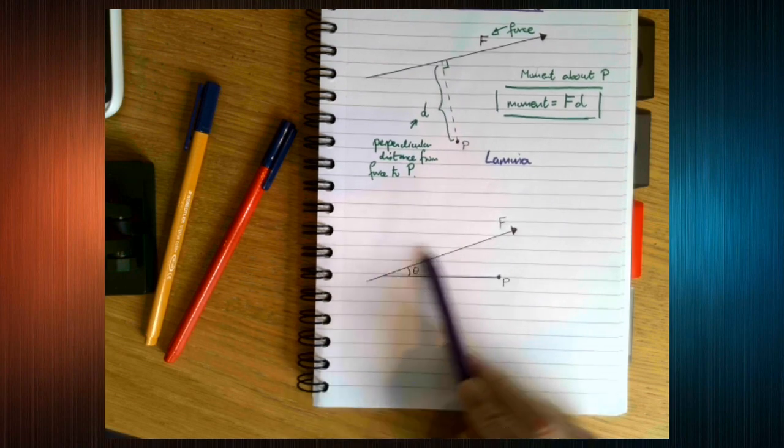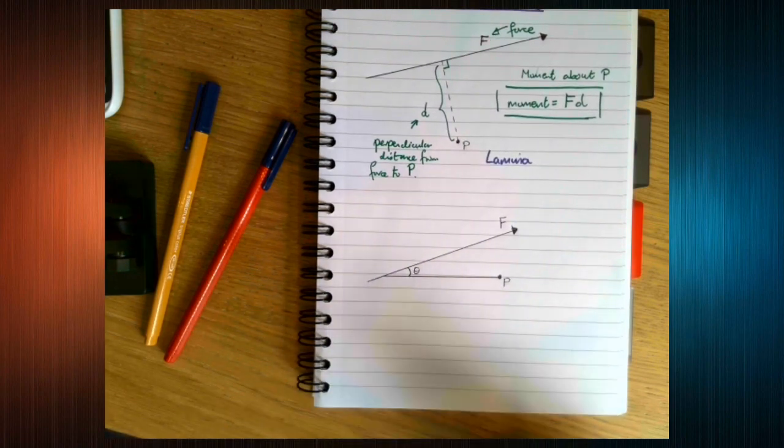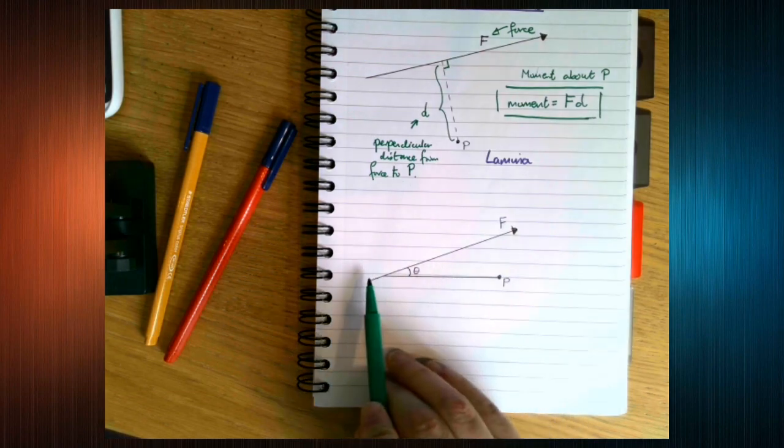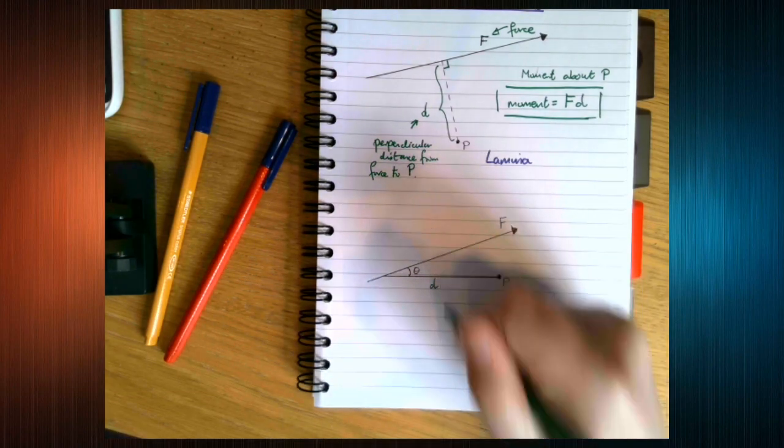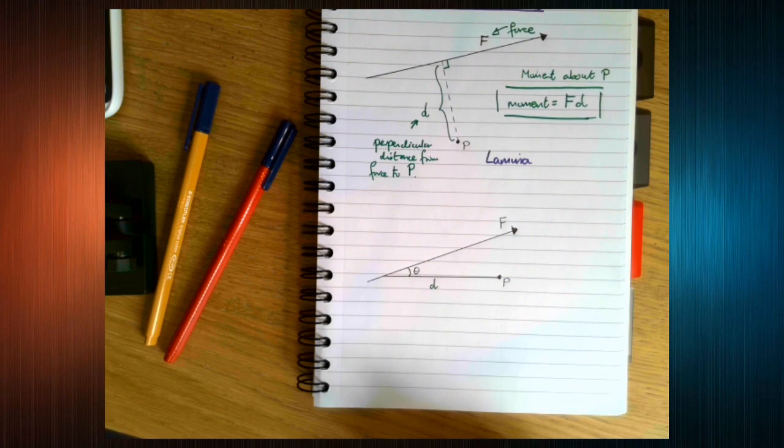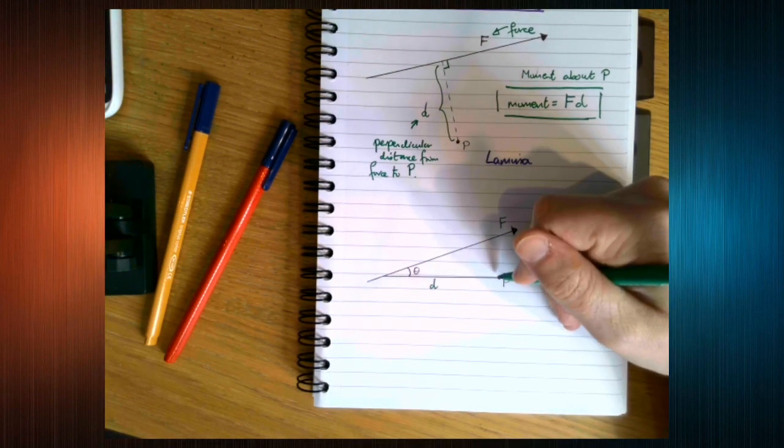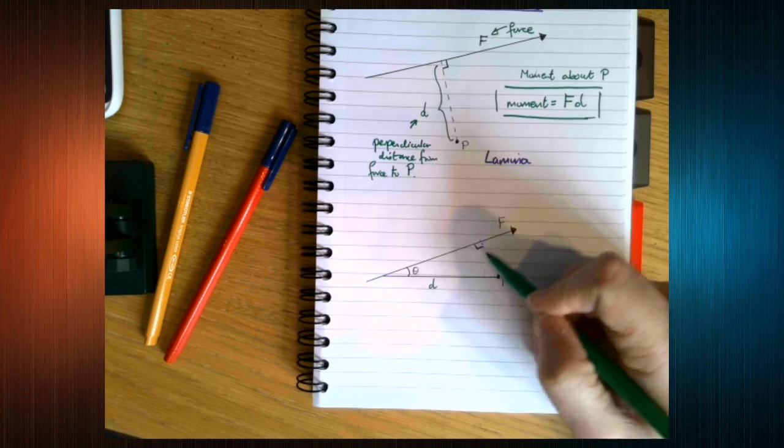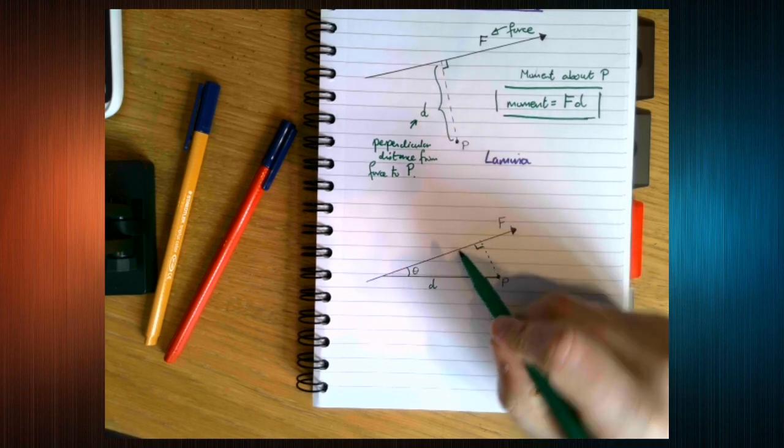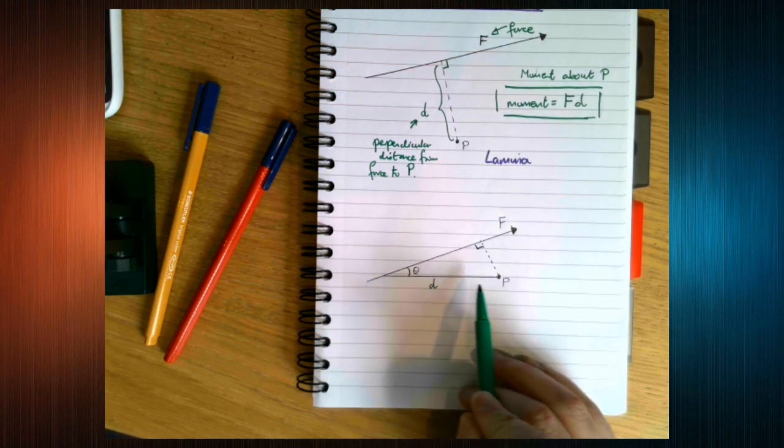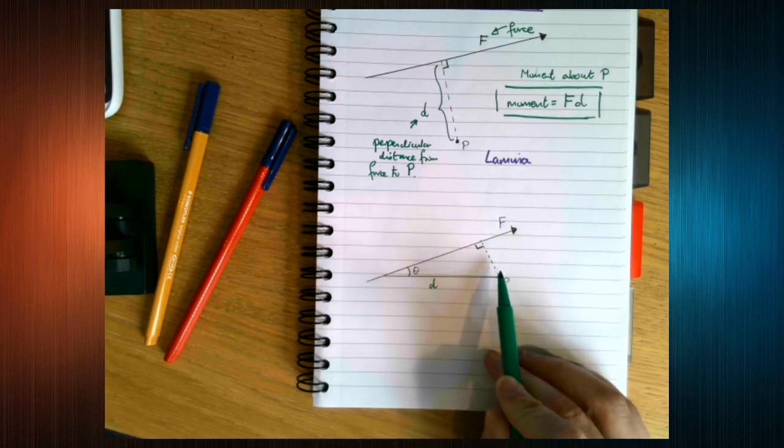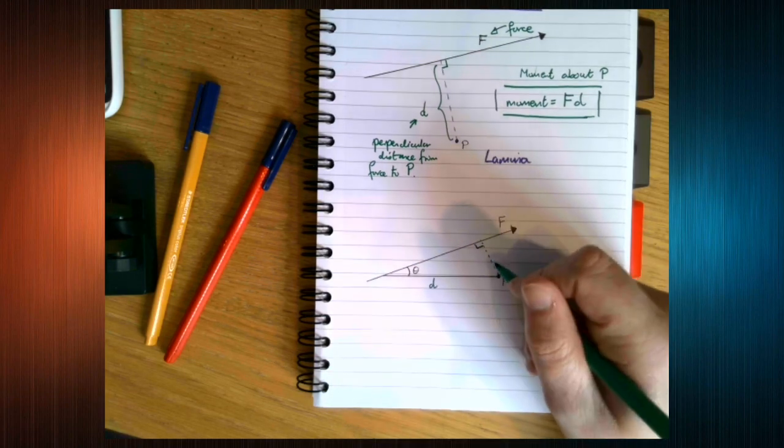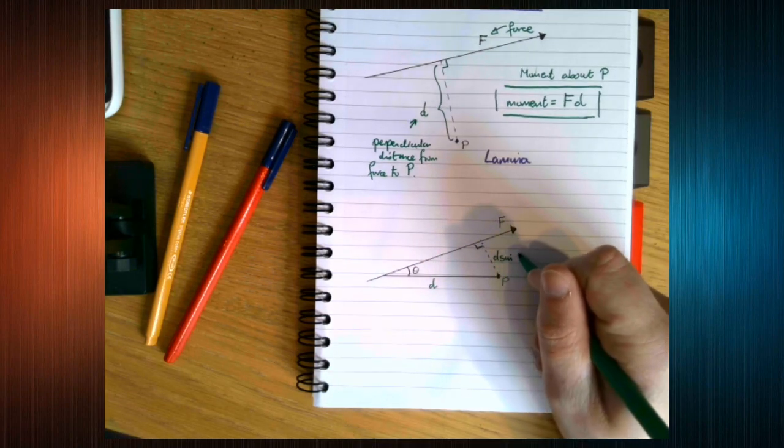But we could be working with a force that's acting at an angle. The difficulty here is moment is still force times perpendicular distance. But this distance here, so let's call this d, that distance is not the shortest distance from P to the force. So this is the distance we need to find. So let's think about this. This is a right-angled triangle and we know what the hypotenuse is. This distance is opposite the angle.